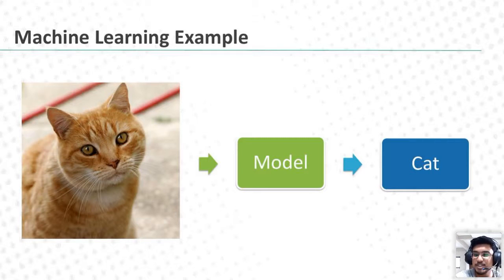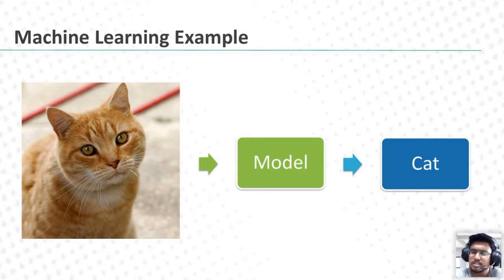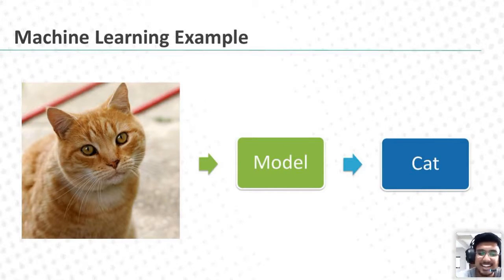If I give the image of a cat, the cat image will go into my program and accordingly it will give me the output — the output is cat. But suppose if I give the image of a dog, will my model give me the output as cat? Not at all. Because we performed great training, it will give the output as dog only.